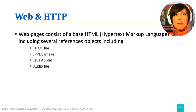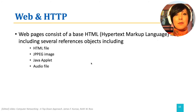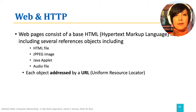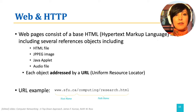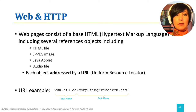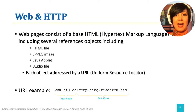A web page consists of a base HTML file including other referenced objects such as images, audio or video files, or a piece of code. Each of the referenced objects is addressed by a URL, Uniform Resource Locator. A URL consists of two main parts: the name of the host that is acting as the web server, and the path to the referenced object. For example, in the URL www.sfu.ca/computing/research.html, the part www.sfu.ca is the host name, and /computing/research.html is the HTML page's path address on that host.